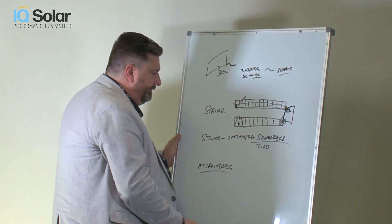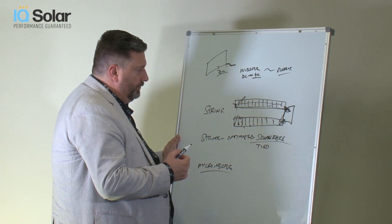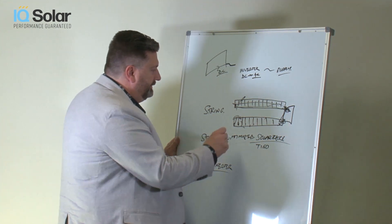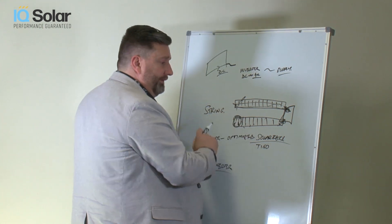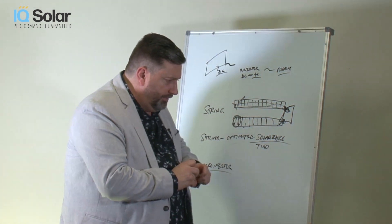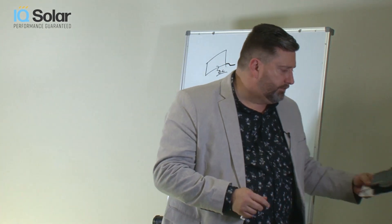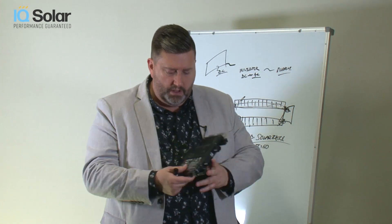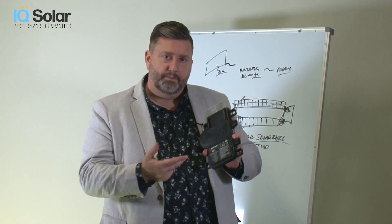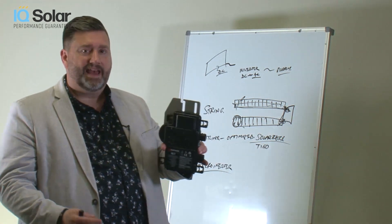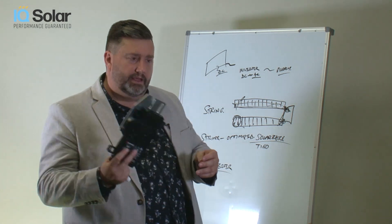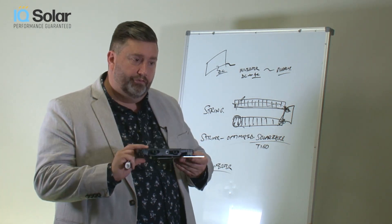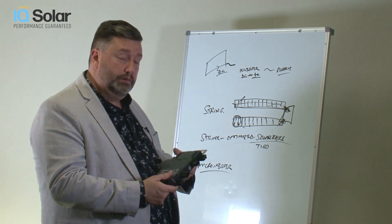The third option is called a microinverter, which actually converts from DC to AC at the panel level. So, the back of each panel is a microinverter. This is one. There's only one company that makes these called Enphase. There's been another company, but Enphase bought them. So these are basically the crème de la crème of how to put together a solar system.